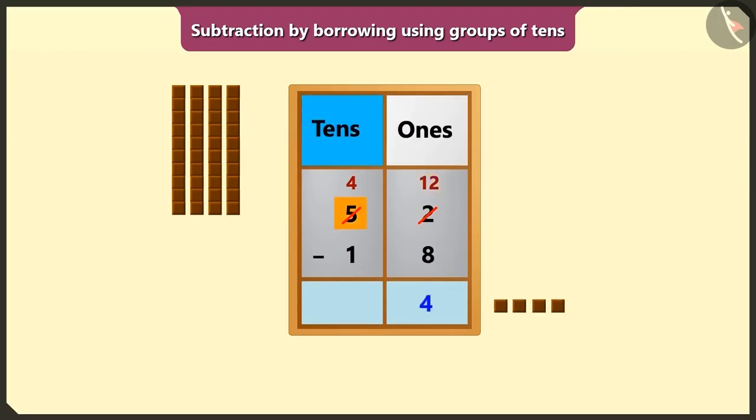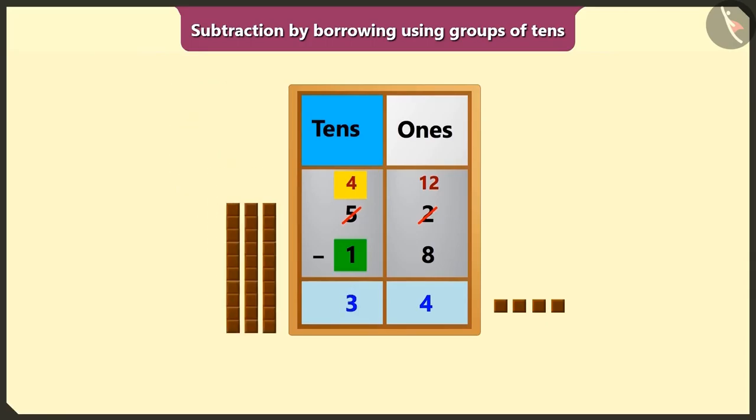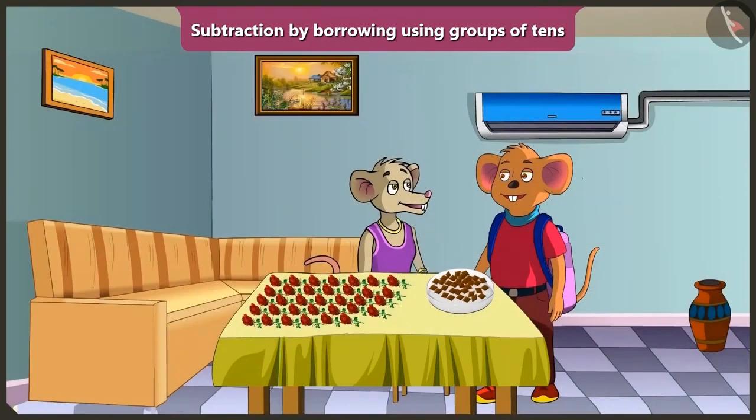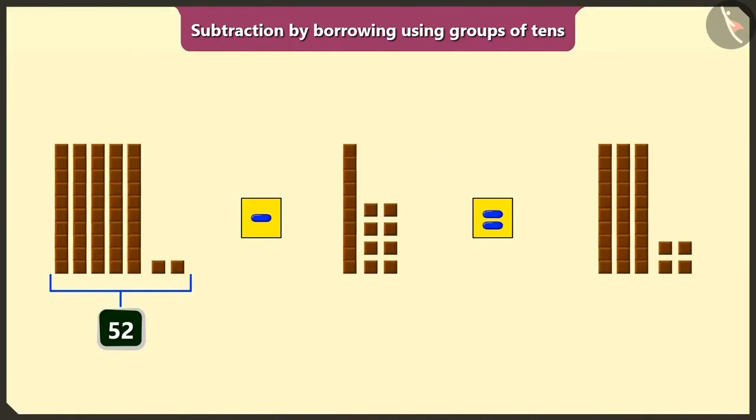Now we have to subtract the numbers of the tens place. If we subtract 1 tens from 4 tens, we will get 3 tens. So we will write 3 in the place of tens. So this way, after eating 18 chocolates from 52 chocolates, we would have 34 chocolates left.